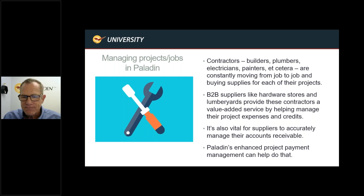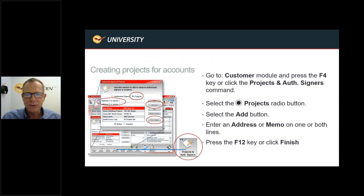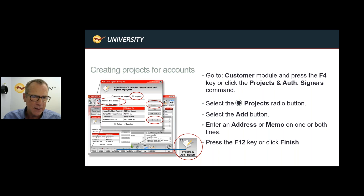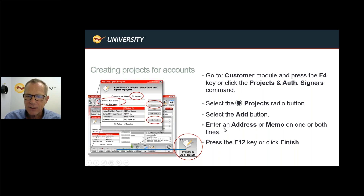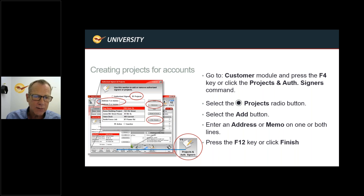Let's move on to creating projects for accounts. You go to the customer module, press the F4 key or click on the Projects and Authorized Signers command. Once you do that, select the Projects radio button — it defaults to Authorized Signer so you must choose Projects. Then select the Add button, enter the address or memo on one or both lines, and press F12 to save it. That's all there is to it.